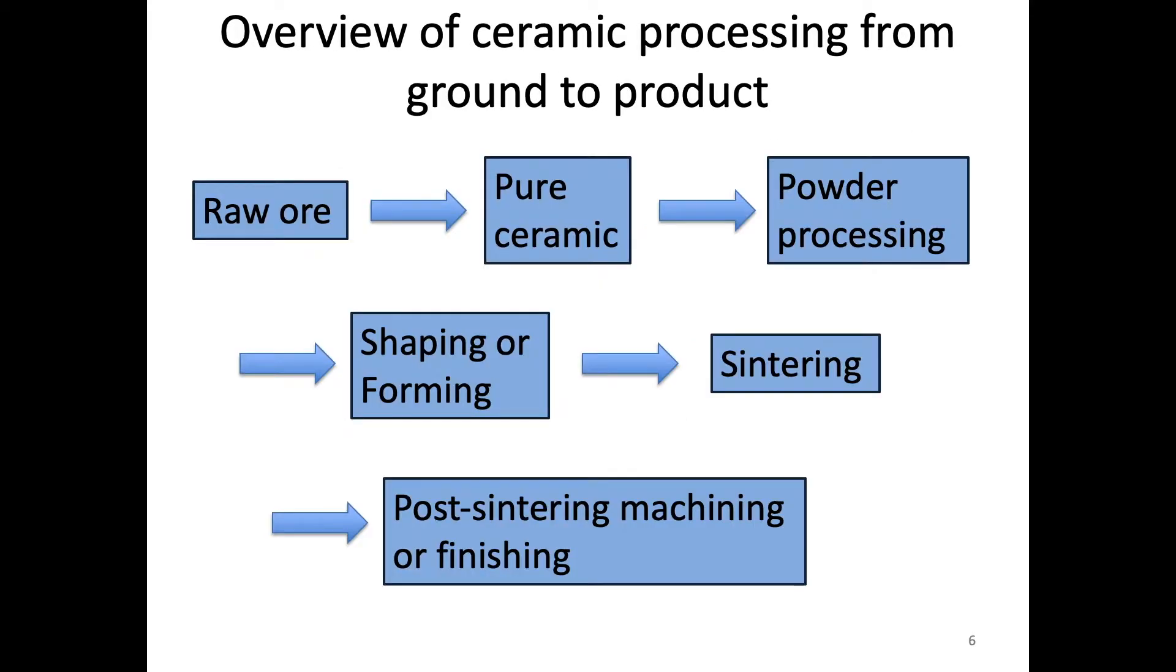And so with that in mind, let's kind of look at the overview of this processing that we would have from the ground to the product. If this is an industrial process, we're oftentimes starting with the raw ore. And so that could be the material that we're interested in that just has quite a bit of impurity in it, or it could be an ore that we have to process or synthesize in some way to get our ceramic. So there's quite a bit that can happen in that step, but we're going to kind of ignore that part.